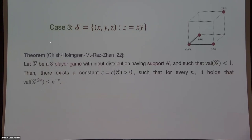Case three is the support {(X,Y,Z) : Z = X·Y} — the four points where Z is the AND of X and Y. For this support we can also prove a polynomial bound. The proof is interesting and uses new techniques, though we currently do not know applications for this case specifically.